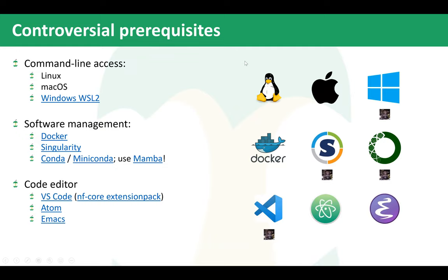The basic requirements to contribute to NFCore modules — NFCore modules is a repository that essentially contains tool wrappers: basic command line tools like BWA index, BWA MEM, SAMtools, FastQC, and so on. The idea is that we want to host these Nextflow DSL2 wrapper scripts that we can share across NFCore pipelines and also within the Nextflow community.